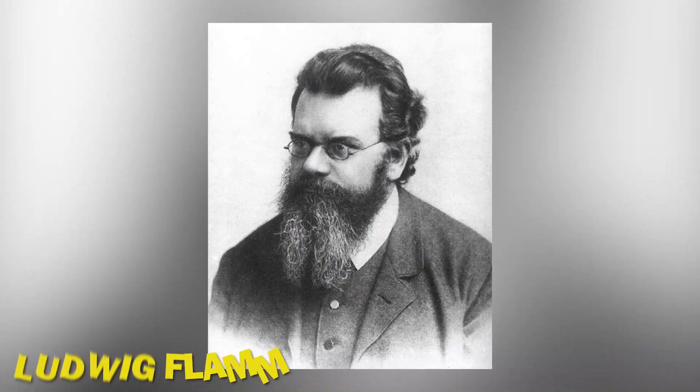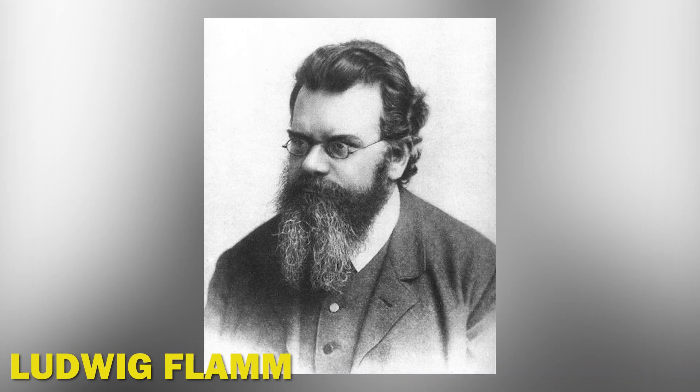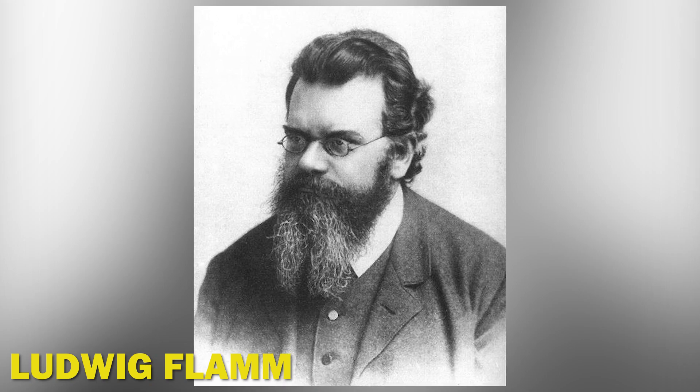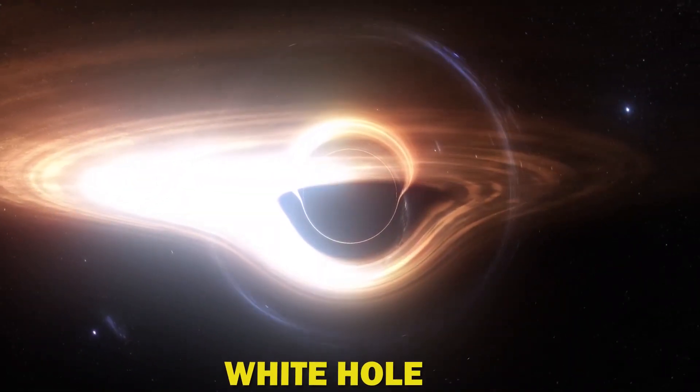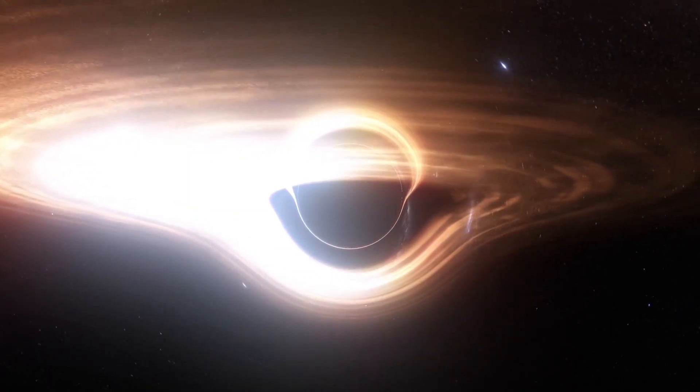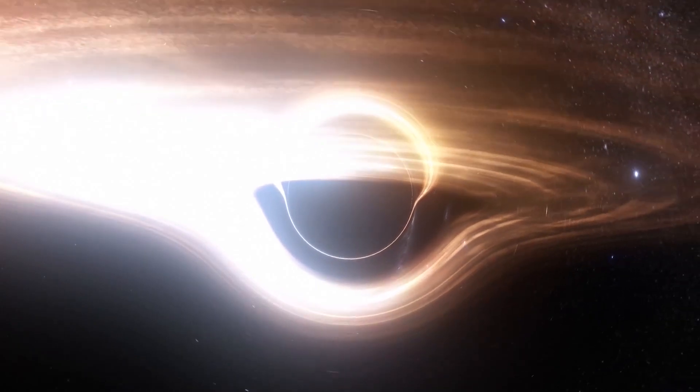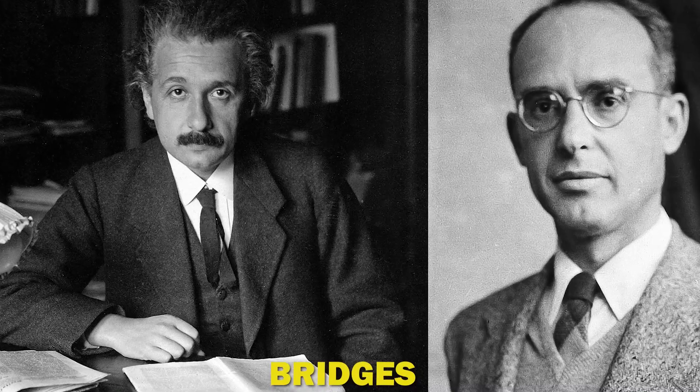But that time they didn't use the word wormholes. Austrian scientist Ludwig Flamm discovered a different solution to Albert Einstein's general relativity equations while examining one provided by another researcher. He talked about a white hole, which is a black hole's hypothetical time reversal version. There could be a space-time tunnel that connects the entrances to both black and white holes. In 1935, Einstein and physicist Nathan Rosen used the theory of general relativity to elaborate on the idea, proposing the existence of bridges through space-time. These bridges connect two different points in space-time, theoretically creating a shortcut that could reduce travel time and distance. The shortcuts came to be called Einstein-Rosen bridges or wormholes.